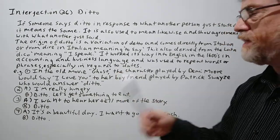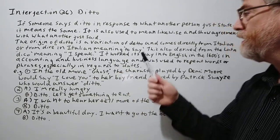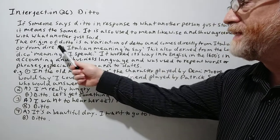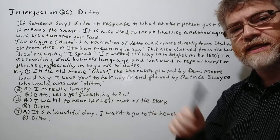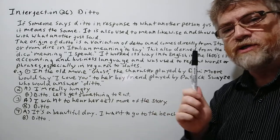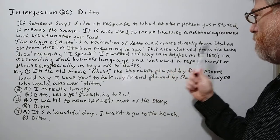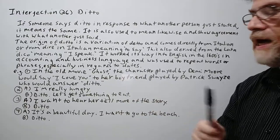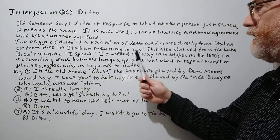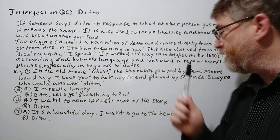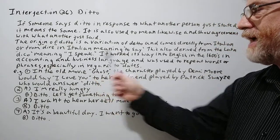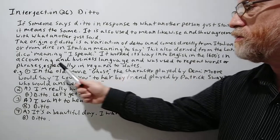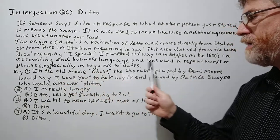The origin of ditto comes directly from Italian, from 'dire' in Italian, meaning 'to say' — that's the infinitive form of the verb to speak or to say. This also derived from the Latin 'ditto,' meaning 'I speak.' It worked its way into English in the 1600s in accounting and business language, and was used to repeat words and phrases, especially in regards to dates.